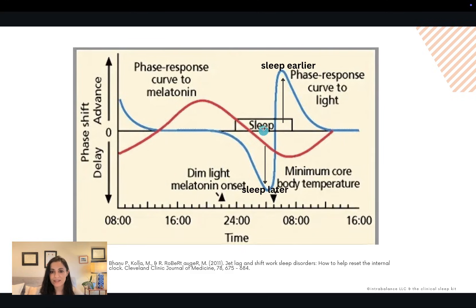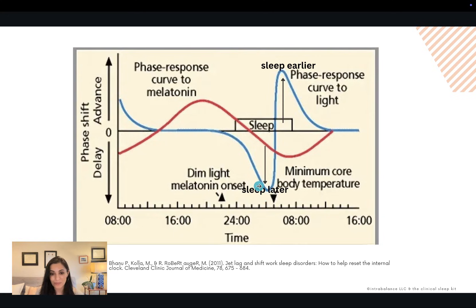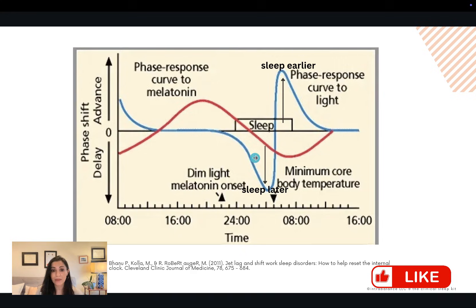The same principle applies to light. Getting light after the minimum core body temperature — which is typically about two to three hours before a person's usual wake time — is going to have a maximal effect on advancing the sleep phase or pulling sleep earlier. Getting light exposure during the sleep zone, shortly before that minimum core body temperature, is actually going to push sleep later and delay sleep onset. I like to use this graphic with my patients to explain how the timing of melatonin and light therapy impacts their body clock.